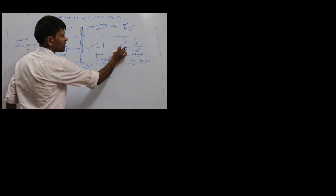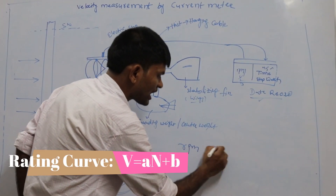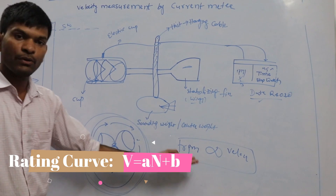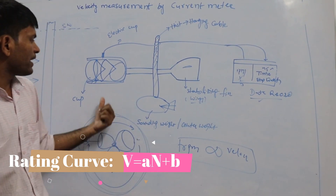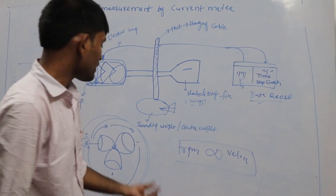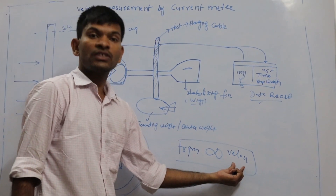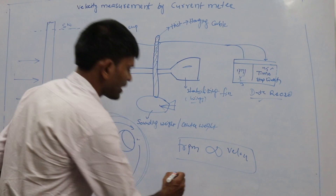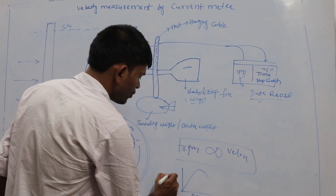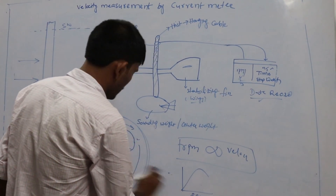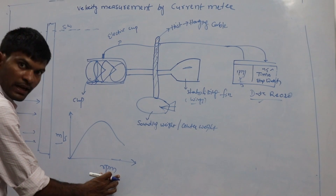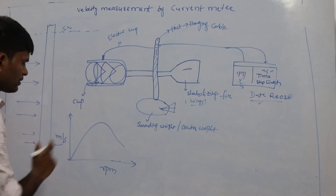Based on these revolutions, the revolution of your impeller is directly proportional to the velocity of your stream. This is the most important point asked in examinations like GRF and TRS. In the current meter, the rotation speed of the impeller is directly proportional to the velocity of your stream. This relationship is called the rating curve — it gives the relation between the number of revolutions of your impeller versus the speed or velocity of your stream (RPM versus velocity).